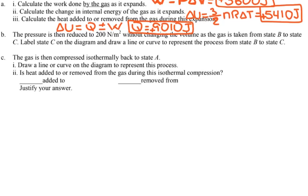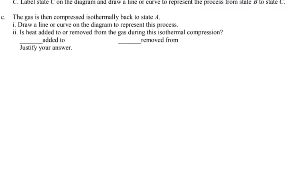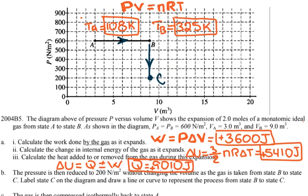The gas is then compressed isothermally back to state A, meaning we go from C to A. The graph for an isothermal process is a curve. To recap: the A→B process had ΔP = 0 (isobaric); B→C had ΔV = 0 (isovolumetric); and C→A is isothermal with ΔT = 0.